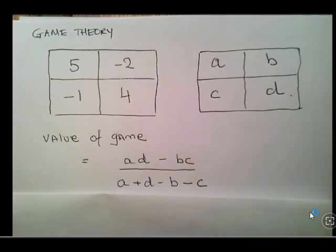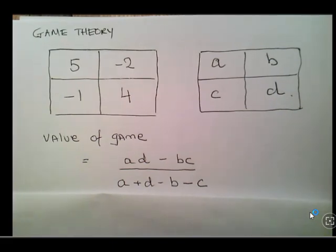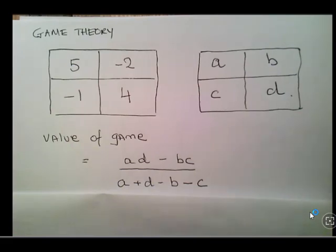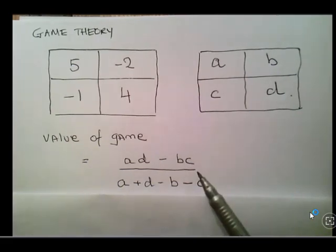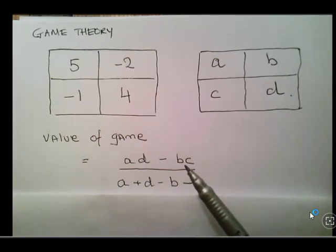The formula for the value of the game is AD minus BC, over A plus D minus B minus C. If you are familiar with the formula for the determinant of a 2x2 matrix, the numerator there should look fairly familiar — it is actually the full formula for the determinant of a 2x2 matrix.